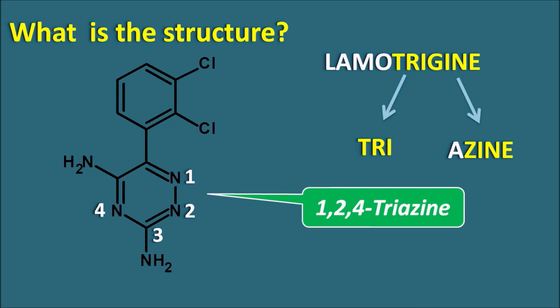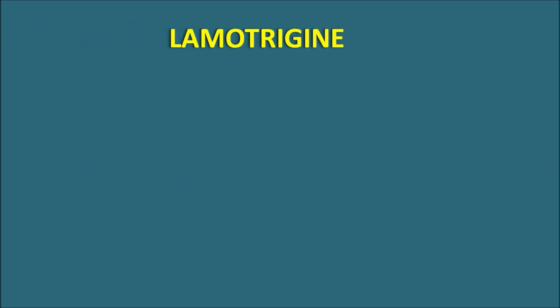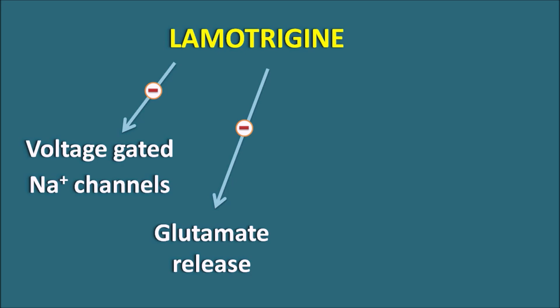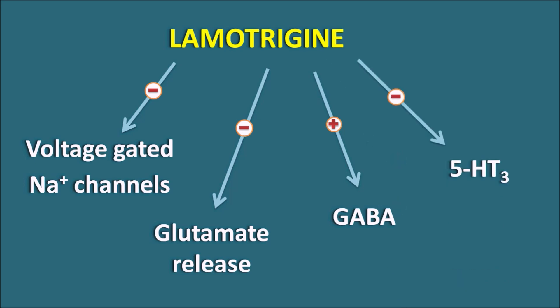Now let us see how lamotrigine acts. Lamotrigine acts by multiple mechanisms, though the exact mechanism is not fully known. Lamotrigine blocks different types of receptors and ion channels. One primary action is to block voltage-gated sodium channels, which are responsible for the release of excitatory neurotransmitters like glutamate. By blocking these voltage-gated sodium channels, lamotrigine can block glutamate release, which is mainly responsible for CNS excitation and the epileptic focus. This drug can also increase GABA activity — an inhibitory amino acid neurotransmitter — thereby inhibiting the excitatory response. Finally, lamotrigine can also act on 5-HT3 receptors, which may also be responsible for anti-epileptic action.